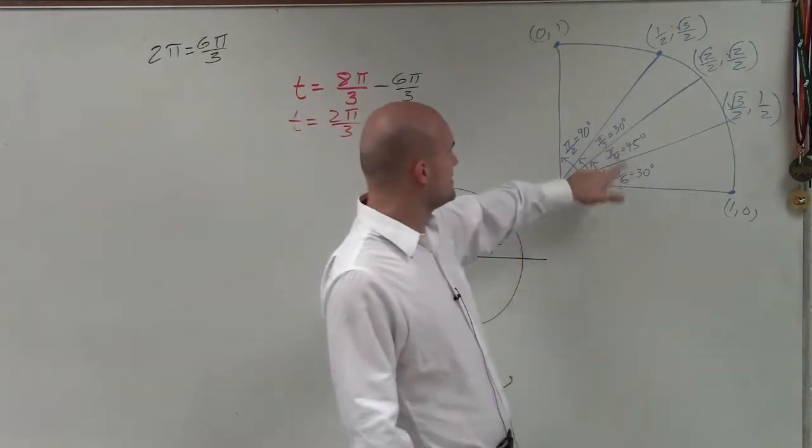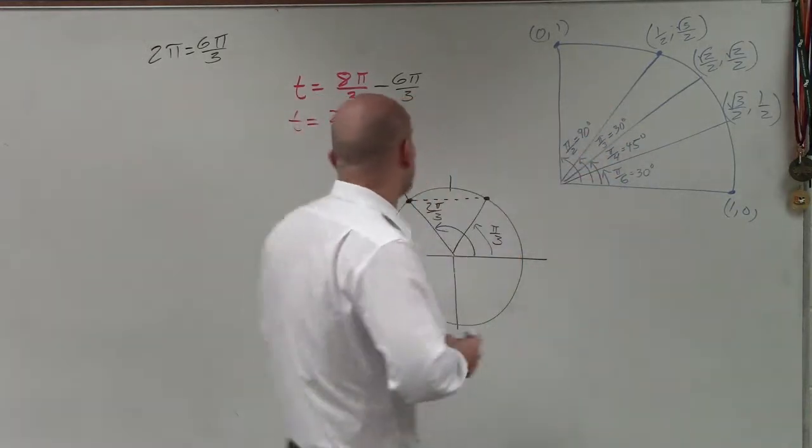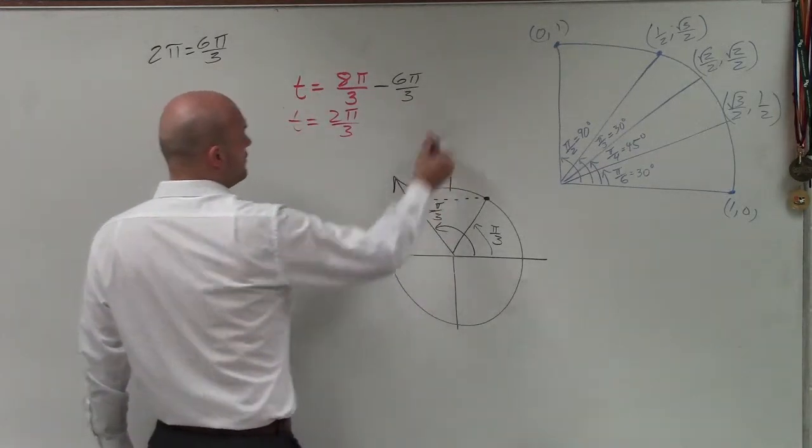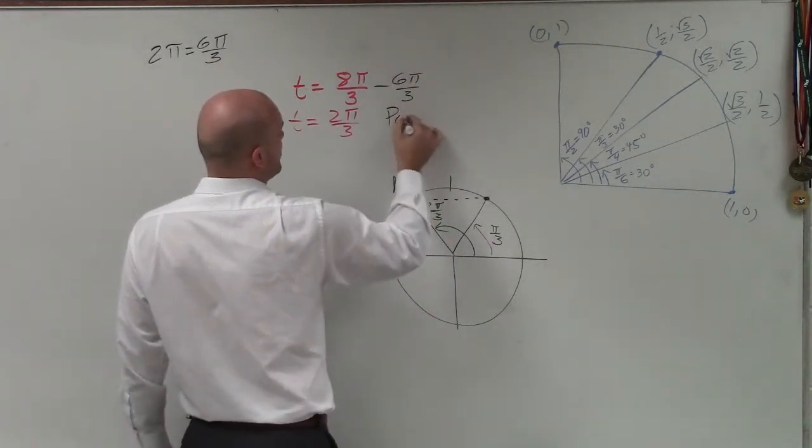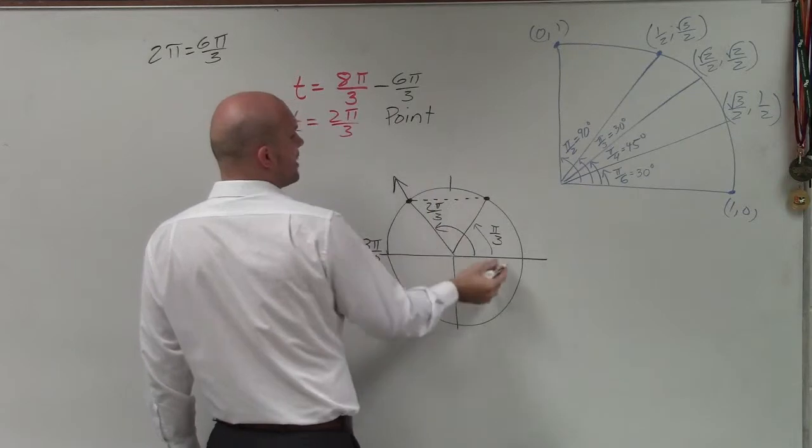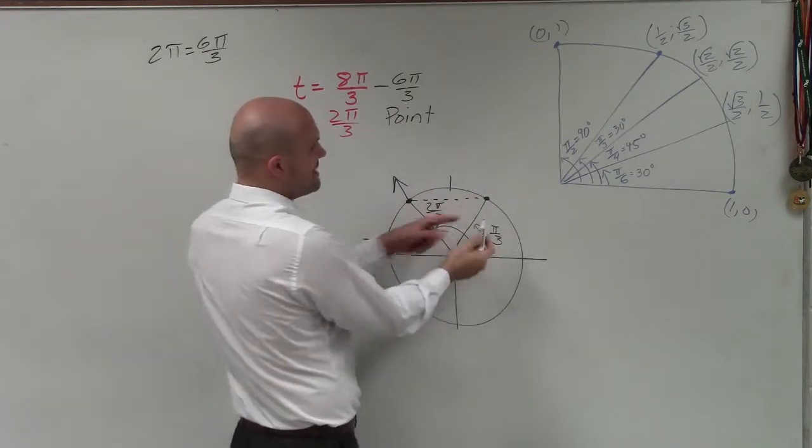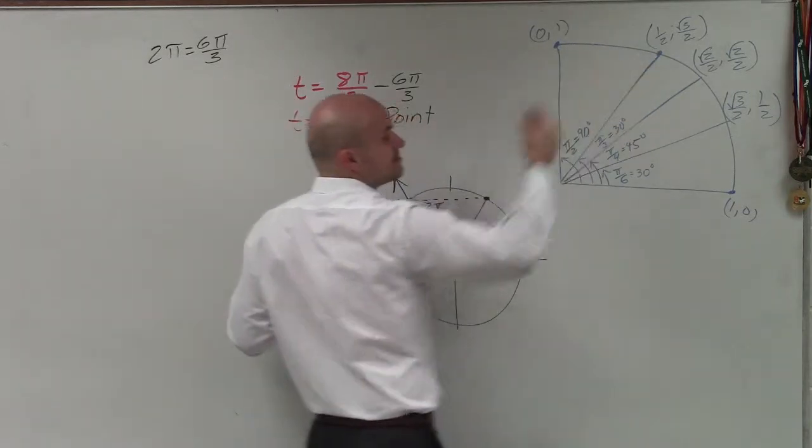So now I go over to my unit circle and I say, all right, the point at π over 3, so now I found the angle. The next thing I need to do is write in the point. So the point at 2π over 3, well, it's the same point as π over 3, which is...